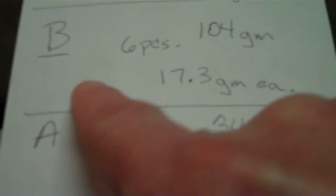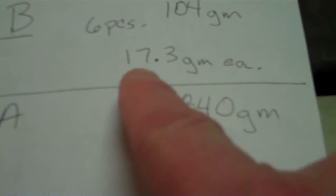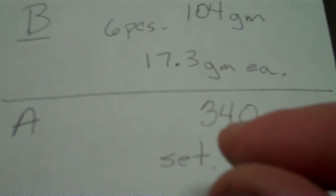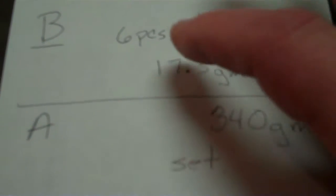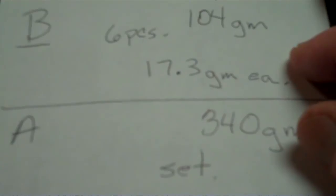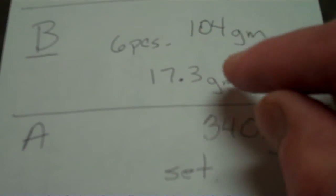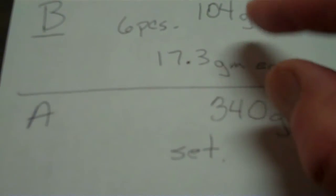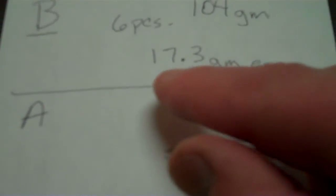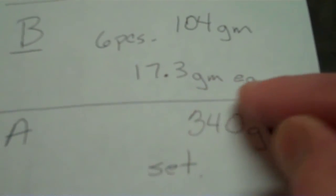Set B, six pieces. I believe that was the lighter, smaller candle holders. 104 grams for the six pieces. 17.3 grams each.